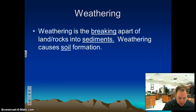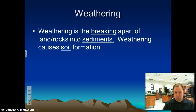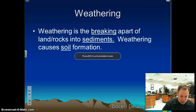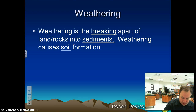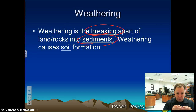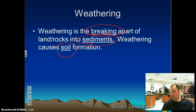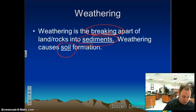Weathering is the breaking apart of land and rocks into sediments. Weathering causes soil formation — we take rocks and sediments and break them down into their individual pieces. Rock breaking down into little bitty pieces — that's sediment, which ultimately creates soil. We talked about primary succession where we take rock and turn it into soil. That's again a weathering process that happens by wind and water, and also plants and other things.